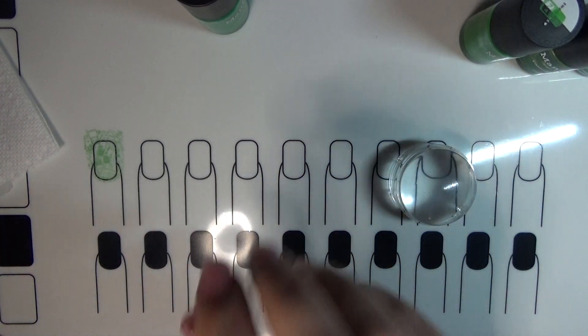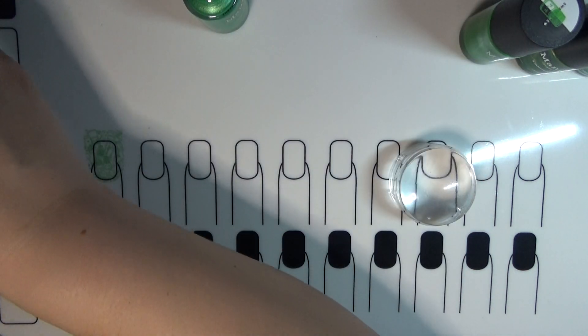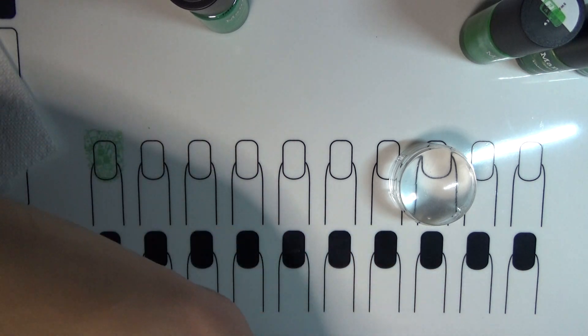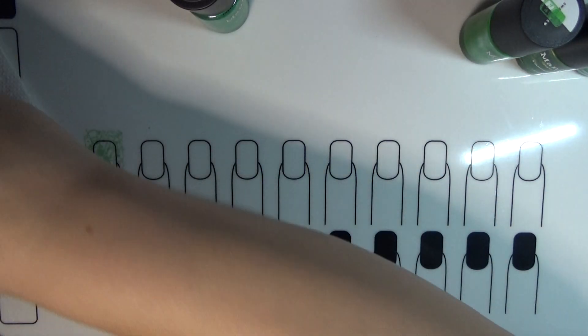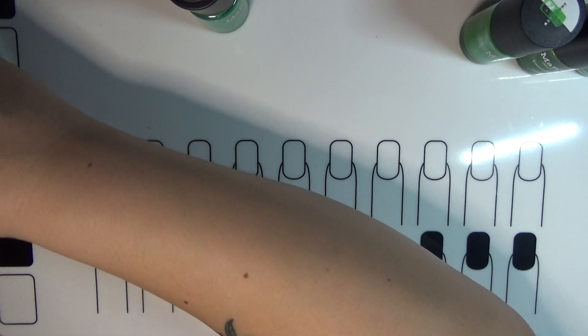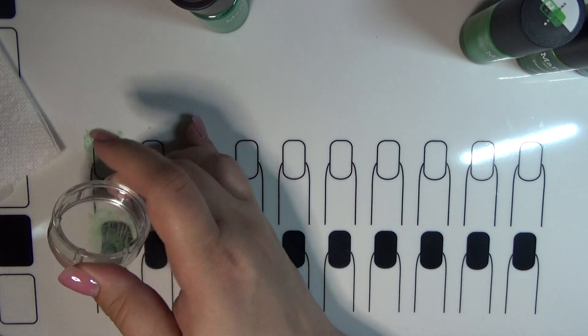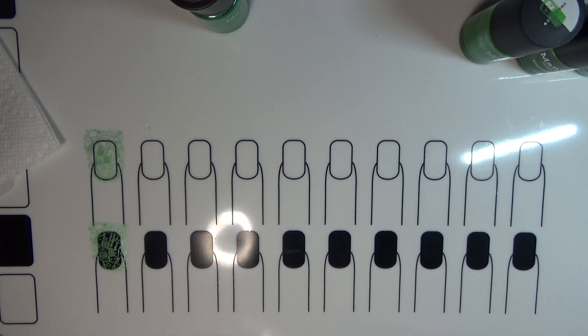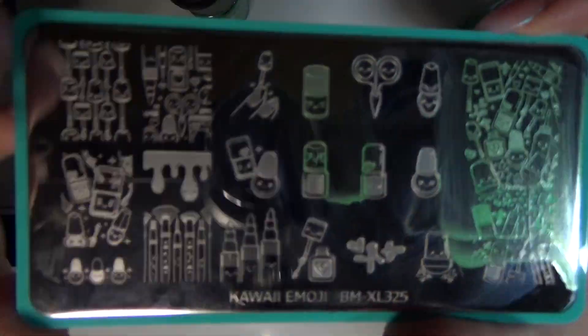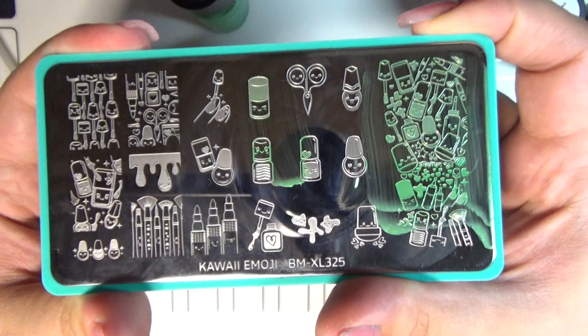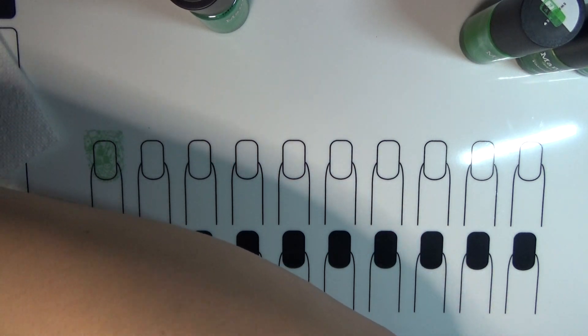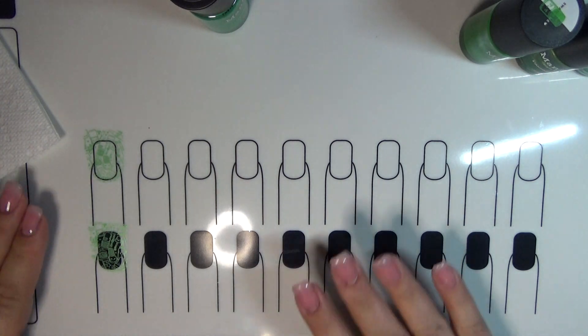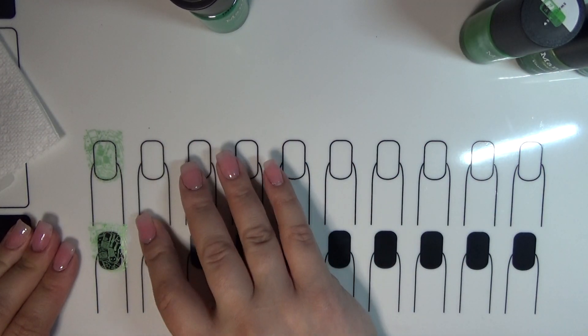That does show up nicely on white. Let's see how it shows over the black. In case you're wondering what plate I'm using, I'm using Maniology's Kawaii Emoji BM-XL325. I've got that over the black. So we now have it stamped over the white and the black.